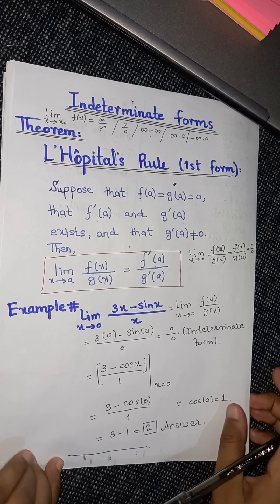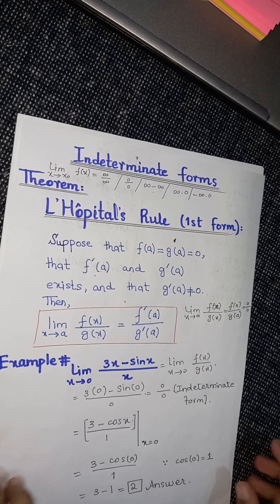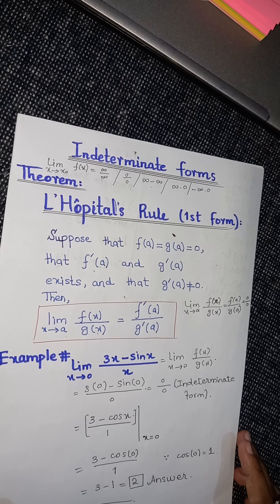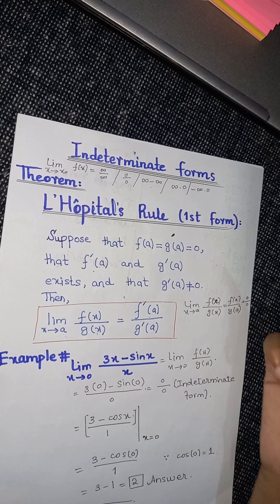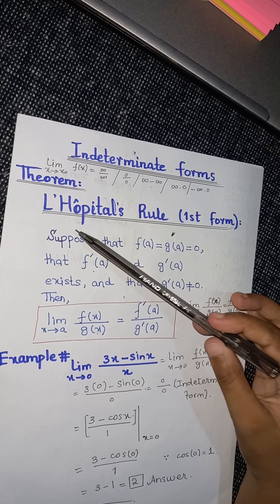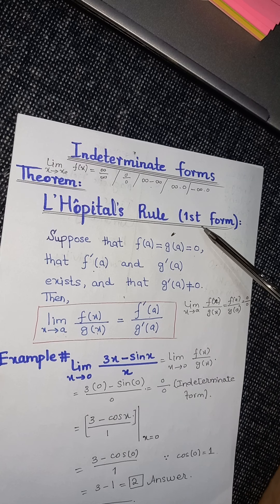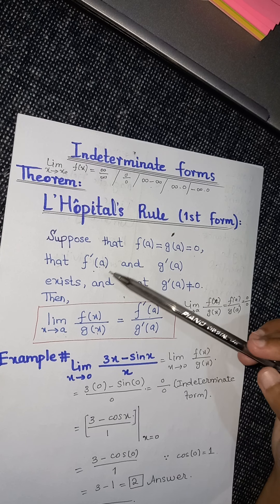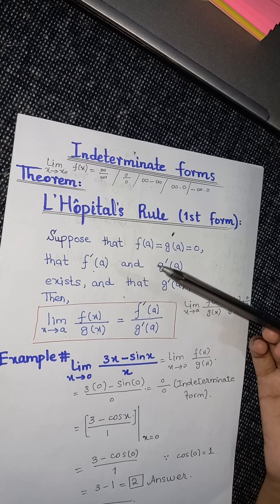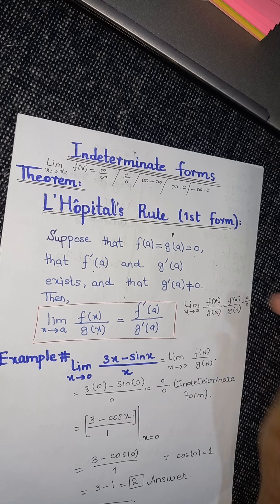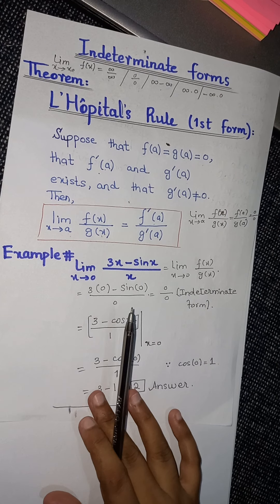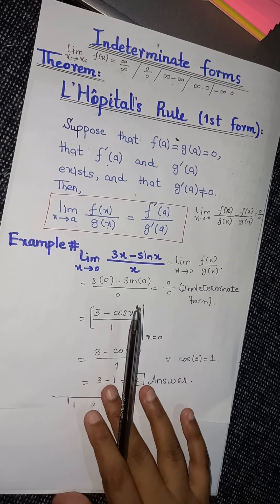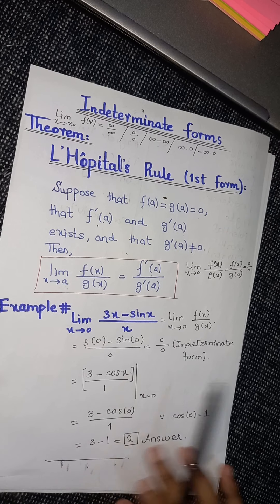In today's lecture I have discussed indeterminate forms — what kind of situation occurs that we say it is an indeterminate form — and we have discussed the theorem, L'Hôpital's Rule first form. In the next lecture I will discuss its stronger form, L'Hôpital's Rule second form, and we will also discuss an example. That is all for today's lecture. See you next time, thank you.